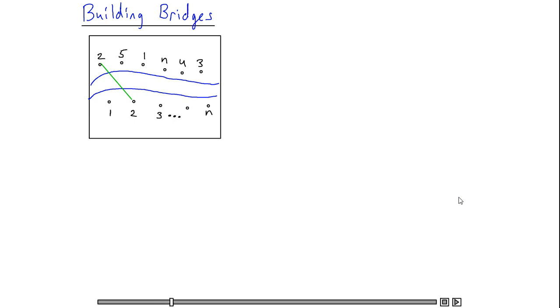And what I would like to do is build bridges between pairs of cities on the northern and southern banks, but I don't want to build a pair of bridges which crosses, like I've just done. And I want to build as many bridges as I possibly can.